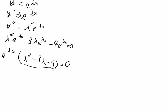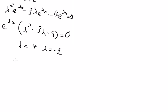We find the solution of the characteristic equation, which gives us roots of positive four and negative one. So the complementary solution is: y_c equals C1 times e to the power of four s, plus C2 times e to the power of negative s.